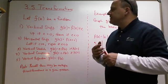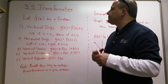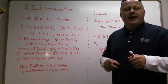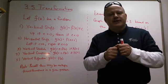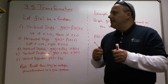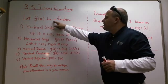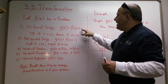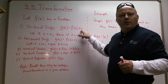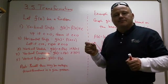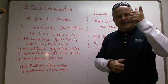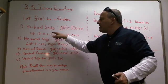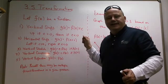The five transformations we are going to be discussing: the first one is a vertical shift. This is basically taking a function and going up or down with it. So if you have a basic function f of x and you add some number to the y-coordinates — if that number is positive, it's going to go up; if it's negative, it's going to go down.